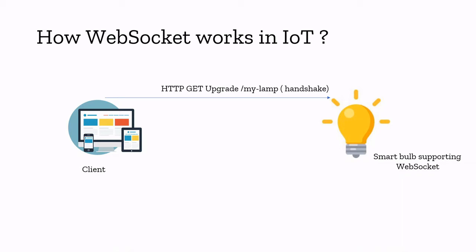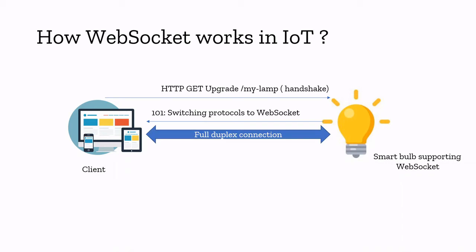Once the server receives this request from the client, it will respond with 101 — I'm switching the protocol to WebSocket. Now the smart bulb and the client will have a full-duplex connection, meaning the client can send anything to the smart bulb and the smart bulb can send anything or all its information to the client in real time. You should always make a handshake with the server first. If the smart bulb supports WebSocket, it will respond with a 101 status code.